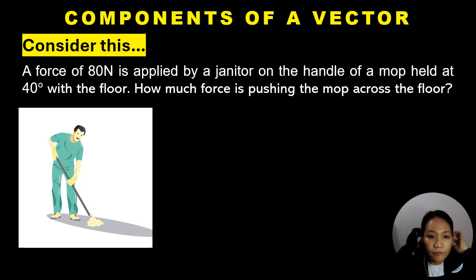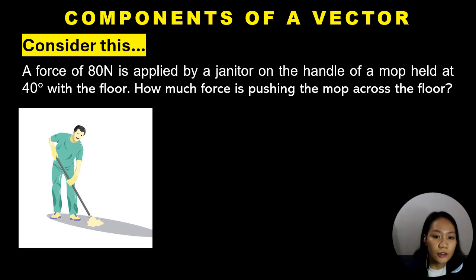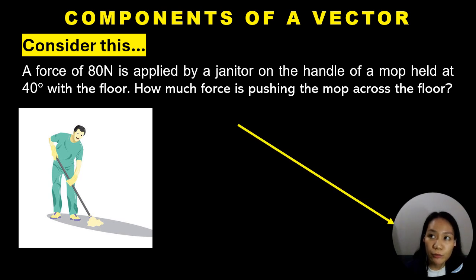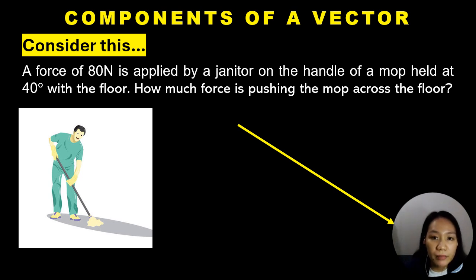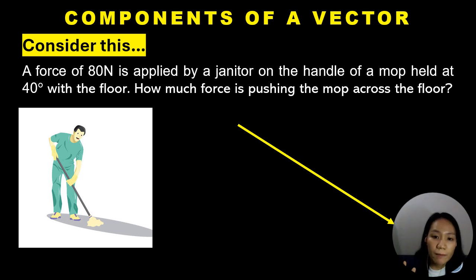Let's consider this example: a force of 80 newtons is applied by a janitor on the handle of a mop held at 40 degrees with the floor. How much force is pushing the mop across the floor? If we use the graphical method, on a piece of paper or graphing paper, you would draw the main vector of 80 newtons oriented at 40 degrees with respect to the horizontal.